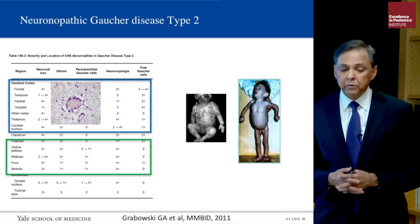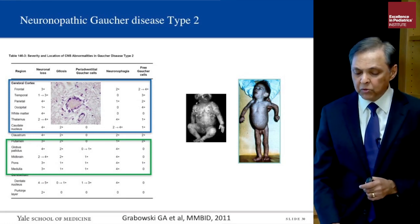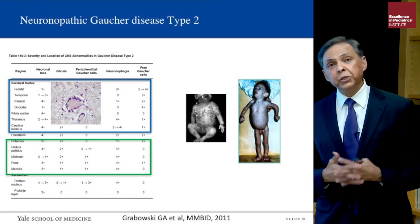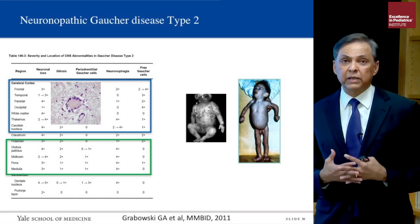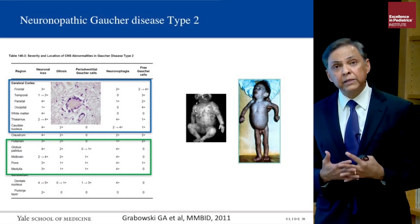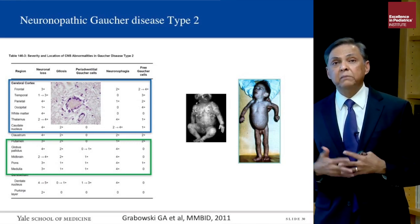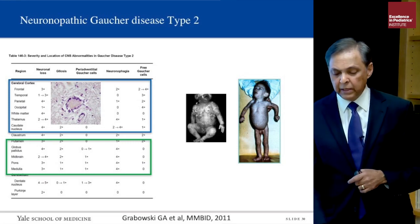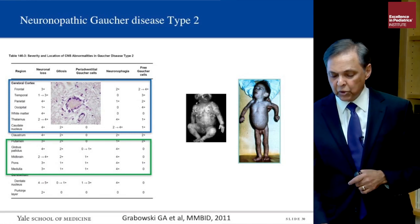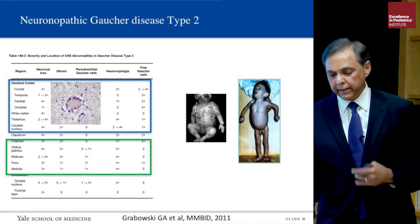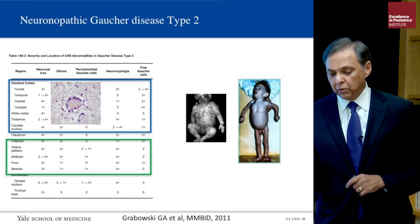Neuronopathic Gaucher disease involves accumulation of Gaucher cells, but in addition there is direct toxic injury to neurons in the brain, believed to be mediated by the toxic lipids that accumulate due to the enzyme deficiency, as shown in analysis of human brain tissue from a child who died of type 2 Gaucher disease.